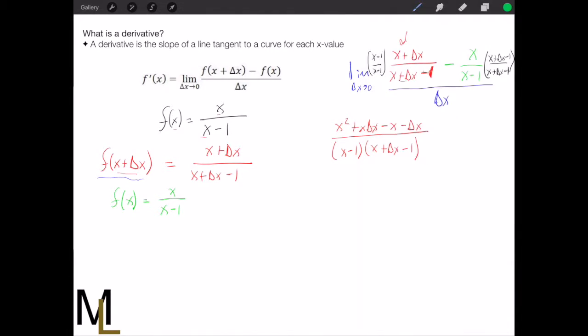We'll do the same thing for the other term here. So we're going to now subtract x distributed across these guys. So x squared plus x delta x minus x all over. And again, I'll leave these separated.